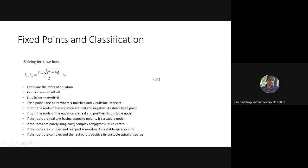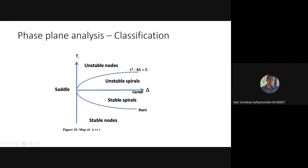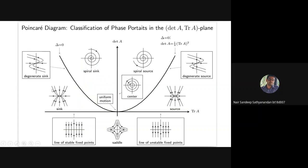In the tau-delta diagram, along the delta axis is the center. There is a curve defined by tau-squared minus 4-delta equals zero. Points between this curve are spirals — above the tau=0 line is an unstable spiral, below is a stable spiral. Similarly, unstable nodes and stable nodes are defined in their respective regions, and when delta is negative that is a saddle node.